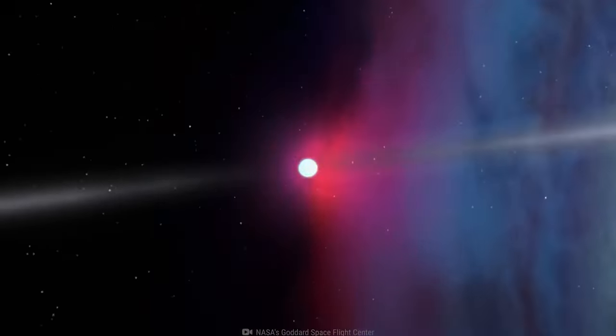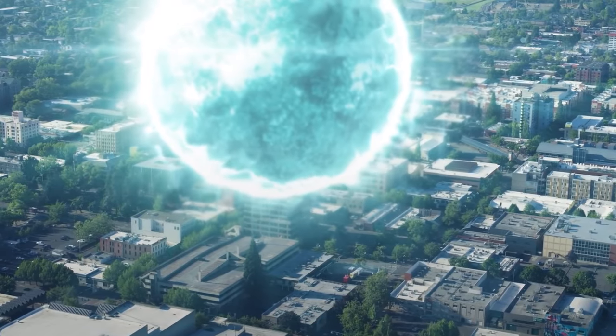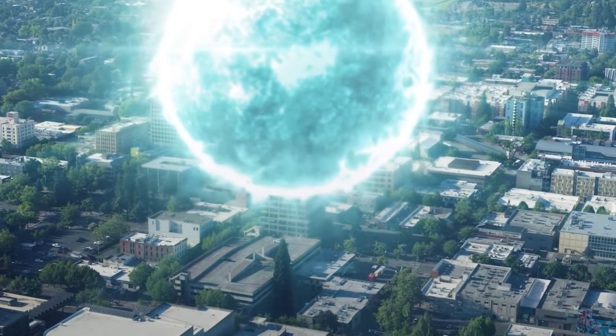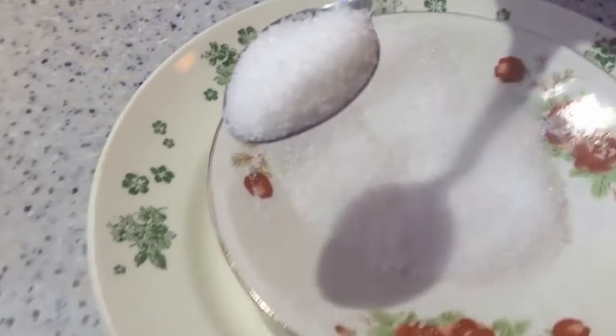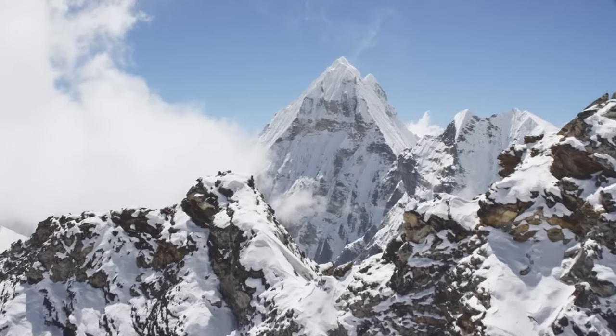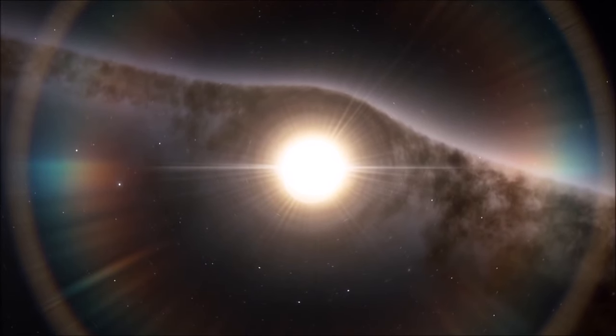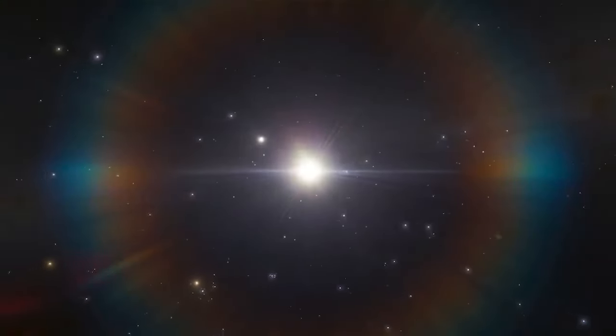Speaking of neutron stars, they possess a mind-boggling density. Imagine packing the mass of our sun into a sphere just 10 to 20 kilometers in radius. These neutron stars have a size of a big city. Their material is so dense that a mere teaspoon of it would weigh a billion tons, equivalent to the weight of a massive mountain like Everest. And the gravitational pull? Oh, it's staggering.